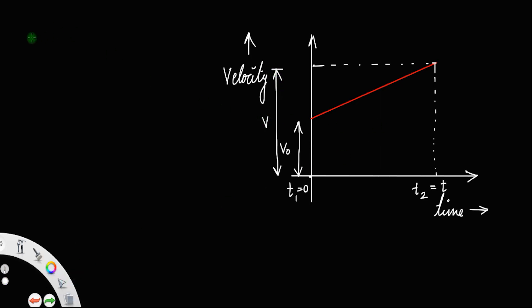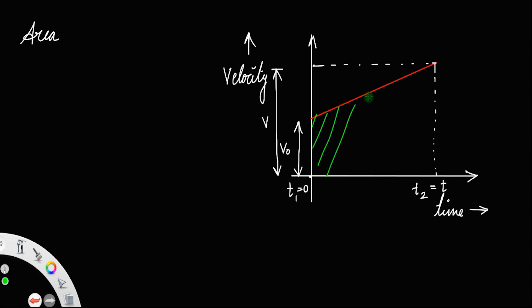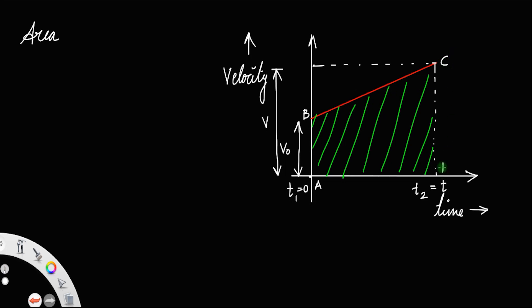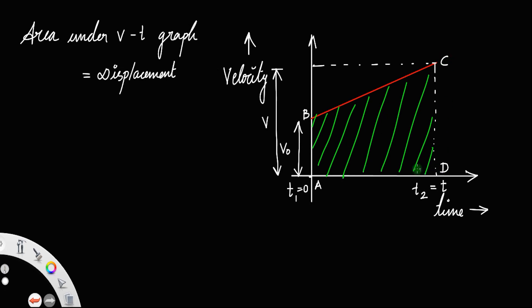Now, we have the area under the velocity-time graph — this whole shaded area, the area of the trapezium, which we call shape ABCD. The area under the velocity-time graph gives the displacement. So we need to find the area of this trapezium, where length CD equals length AB, which equals v, and AE equals CD equals v.